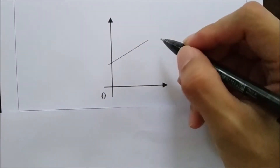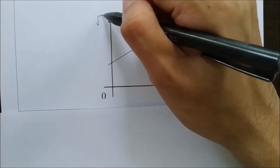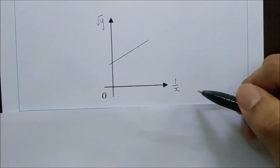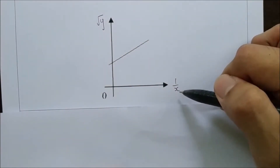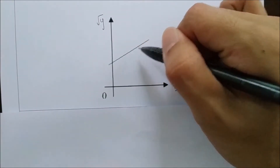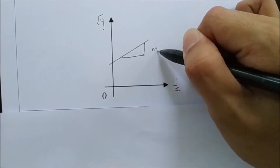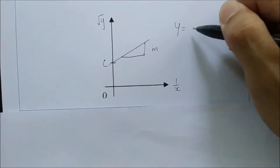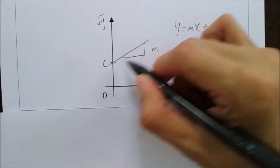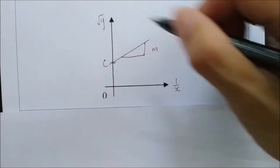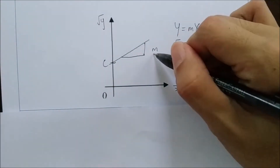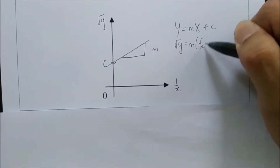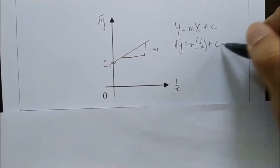If we are given a straight line where the y-axis is the square root of y and the x-axis is the square root of 1 over x, we can find the relationship between y and x by first finding the gradient, then the y-intercept. We can relate the axes using y equals mx plus c because this is a straight line: y-axis is square root of y, m is the gradient, x is 1 over x, and c is the y-intercept.